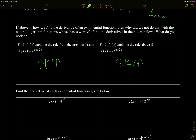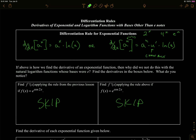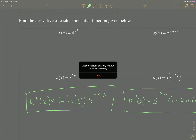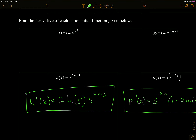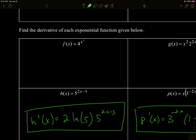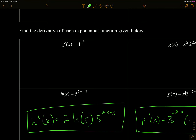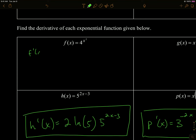Let's try it — we're skipping some sections and going out of order. The derivative of 4 to the x squared is going to be equal to itself. The inner function is x squared, so we have to apply chain rule: times the derivative of the inner function, which is 2x, and then times the natural log of the base. We could write it in a better order: bring the 2 and the ln 4 to the front, then times x, then the exponential.